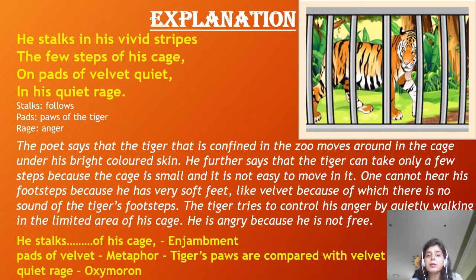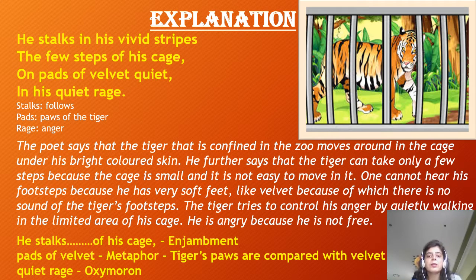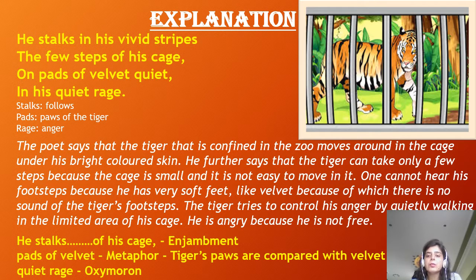The poet says the tiger confined in the zoo moves around in the cage under his bright coloured skin. He further says the tiger can only take a few steps because the cage is small. One cannot hear his footsteps because he has very soft feet like velvet, making no sound. The tiger tries to control his anger by quietly walking in the limited area of his cage. He is also angry because he is not free.